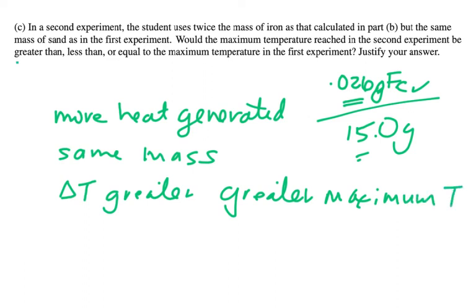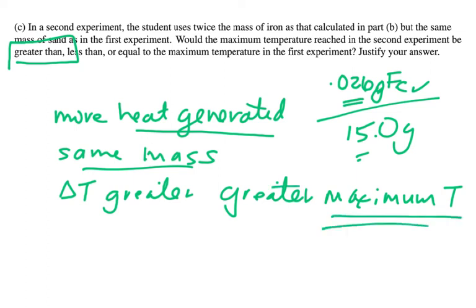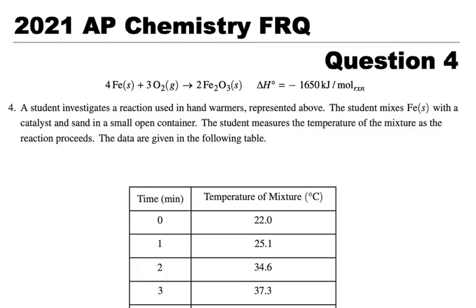The answer is greater than. Because we have more heat generated with essentially the same mass, we get a greater maximum temperature. This is worth one point. That is question number four. Thank you.